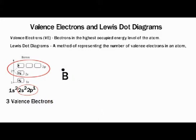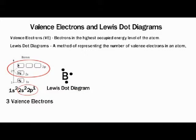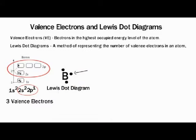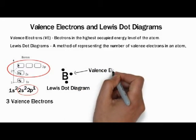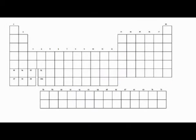That's what a valence electron is — the electron in the highest occupied energy level. Boron has three valence electrons, so we can represent this with a Lewis dot diagram. What we do is write the element symbol, which for boron is B, and put three dots around the element symbol. Those dots represent the valence electrons.